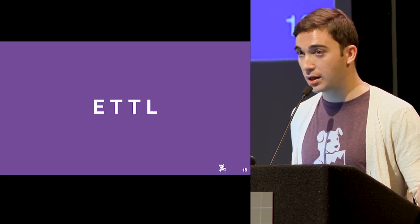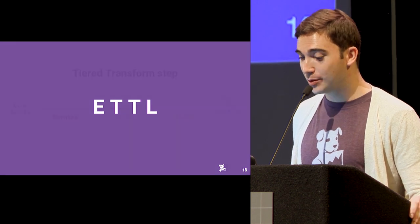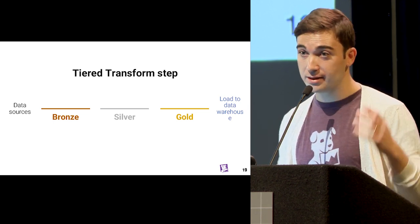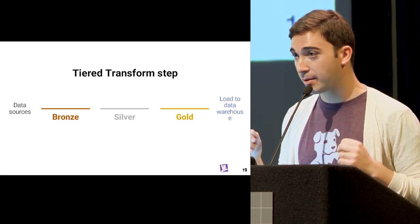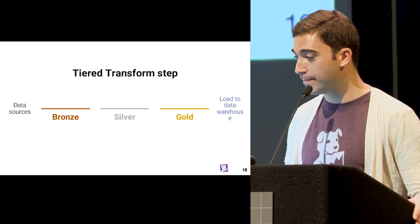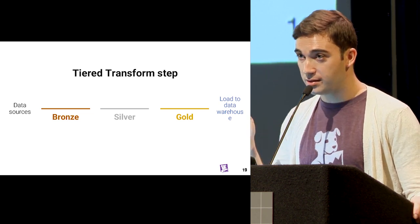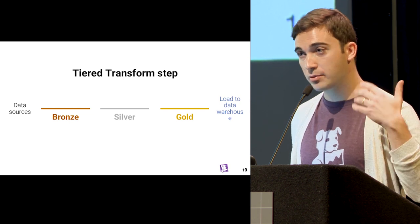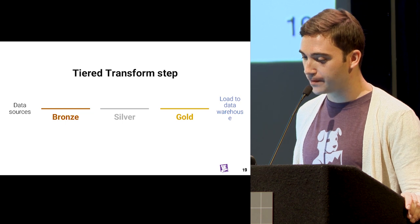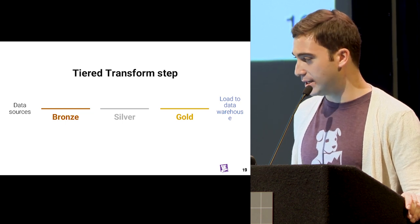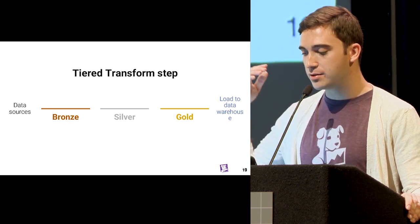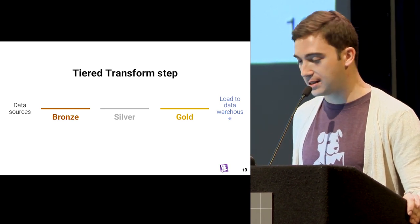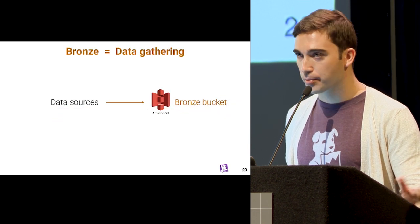We came up with a new approach we call ETTL. The double T stands for tiered transform step. A traditional ETL approach is extracting, doing a bunch of transformation with a transform step, and then loading the output to your data warehouse. Here, the transform step is segmented into three tiers. From the data source, we have the first tier: bronze. Then the second one we call silver, and the last one — you can guess — is gold. Then the output is loaded into the data warehouse.